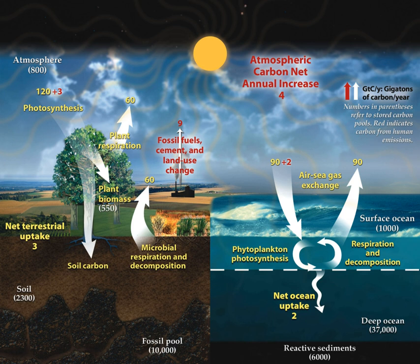The carbon exchanges between reservoirs occur as the result of various chemical, physical, geological, and biological processes. The ocean contains the largest active pool of carbon near the surface of the Earth. The natural flows of carbon between the atmosphere, ocean, terrestrial ecosystems, and sediments are fairly balanced so that carbon levels would be roughly stable without human influence.